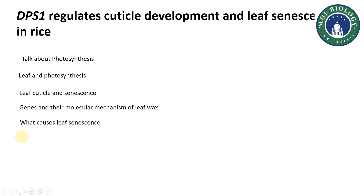At the end, discuss what causes leaf senescence — how those factors which can cause leaf senescence will affect cuticle development and photosynthesis. Before finishing, you have to mention how your research is going to be useful and how your contribution will add meaning to the overall understanding of photosynthesis.